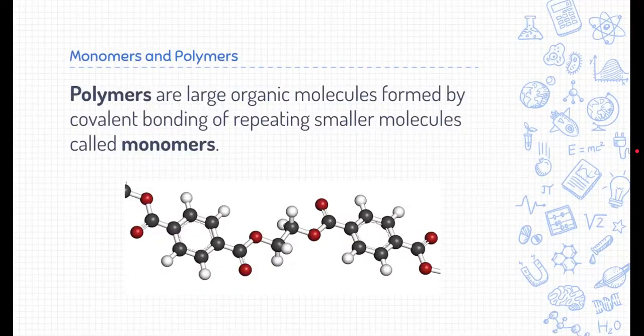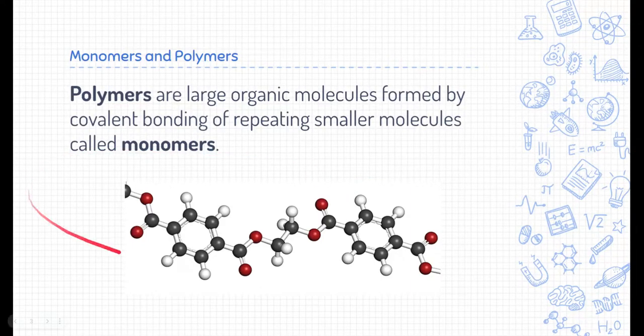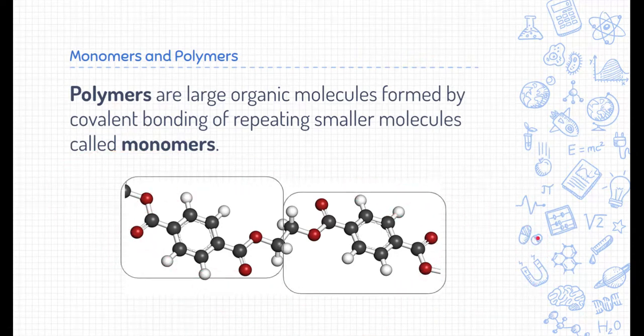Well, quite simply, polymers are just very large organic molecules made of repeating patterns of smaller molecules. Take a look here. This is a small portion of a polymer, and you might notice that there are some repeating patterns in there. These smaller molecules that make up the polymer are called monomers.